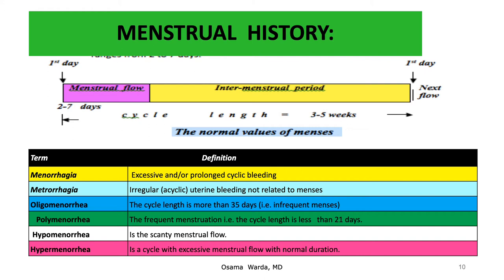Some terms should be known. Menorrhagia is defined as excessive and/or prolonged cyclic bleeding. Metrorrhagia is irregular acyclic bleeding. Oligomenorrhea is infrequent menstrual cycles where the duration between first days exceeds 35 days. Polymenorrhea is frequent menstruation where the cycle recurs in less than 21 days. Hypomenorrhea denotes a scanty amount of menstrual flow; hypermenorrhea is excessive amounts of menstrual flow but with normal duration.